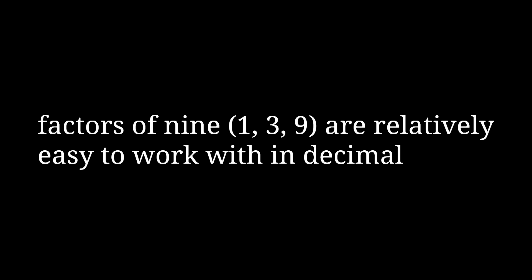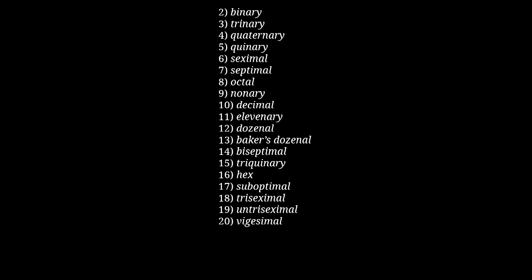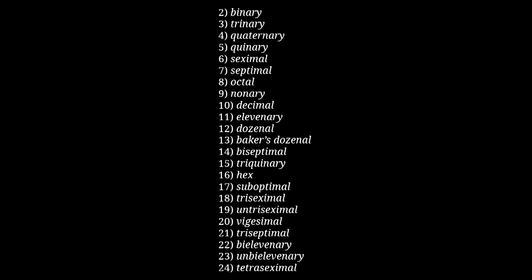For example, in decimal, while 2 and 5 are the most convenient numbers to deal with, 3 is also pretty convenient — and that's because it's a factor of 9, one less than 10. Next is 20, which gets its own root vigesimal. Then there's 21, triseptimal (3 times 7). 22 is bielevenary (2 times 11). 23 is unbielevenary — a prime base, so it's 1 plus 2 times 11. Then 24 can be factored in a few different ways, but the one with factors closest together is 4 times 6, so it's tetraseximal, with 'tetra' for times 4.